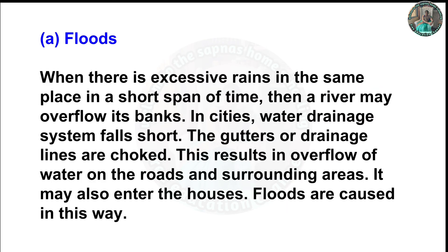Question three: Write the causes of the following. A) Floods: When there is excessive rain in the same place in a short span of time, a river may overflow its banks. In cities, the water drainage system falls short and the gutters or drainage lines get choked, resulting in overflow of water on roads and surrounding areas. It may also enter houses — this is how floods are caused.